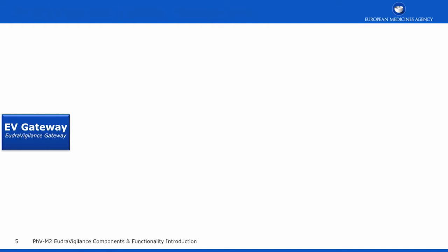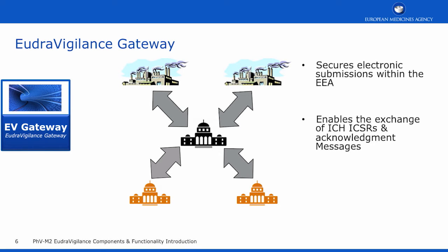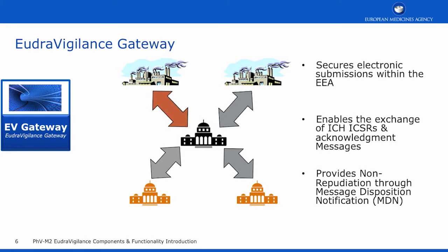The first component we will look at is the EudraVigilance gateway. The gateway provides a secure connection over the internet for electronic submission and exchange of ICSRs and the resulting acknowledgment messages within the EEA. The data is protected through the use of encryption and provides message disposition notifications so that the sender and receiver have non-repudiation. Non-repudiation refers to the ability to ensure that neither party involved in the exchange of data can deny that the exchange took place.